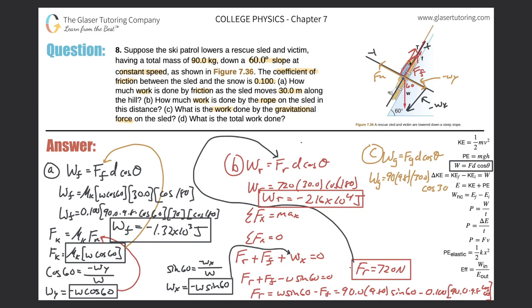Plugging in: W_gravity = 90 × 9.8 × 30 × cos(30°). This equals approximately 2.29 × 10⁴ joules. That's the answer to part (c).